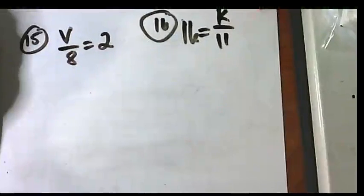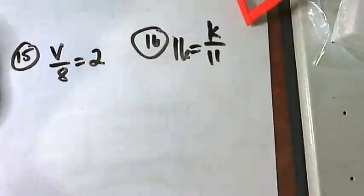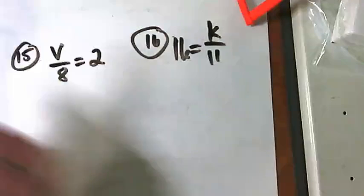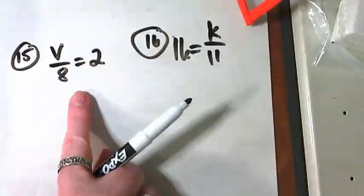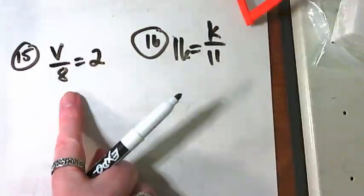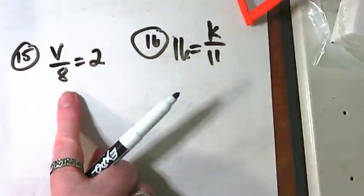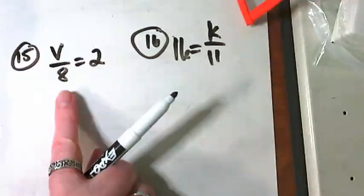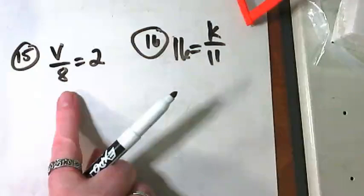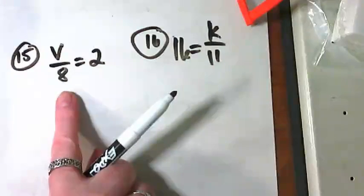I don't even want you to try to solve them yet. I want you to tell me what is the fraction that's here and what is its reciprocal. Go ahead and try writing them on your paper. What is the actual fraction that's here with this V and what is its reciprocal?